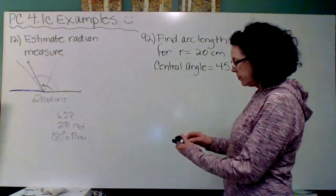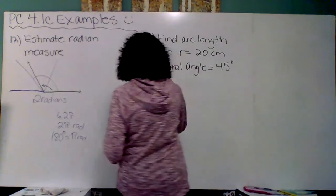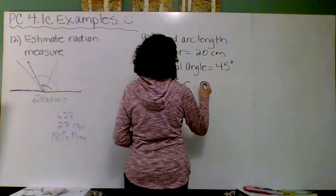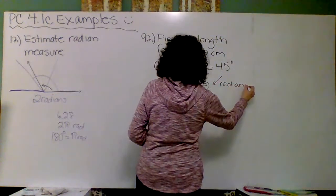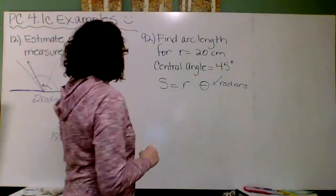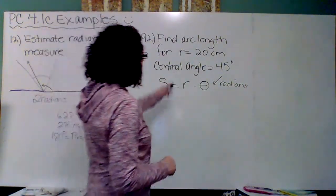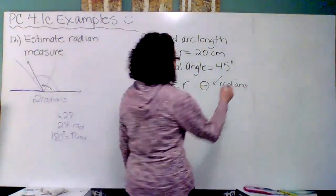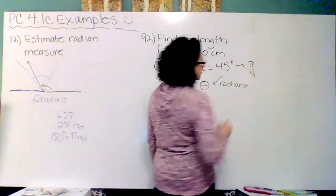Anyway, arc length. They want you to find the arc length at number 92. The formula for arc length is S equals the radius times theta. But this theta has to be in radians. And so my radius is 20 centimeters. Notice, though, my central angle, they gave me in degrees, 45 degrees.